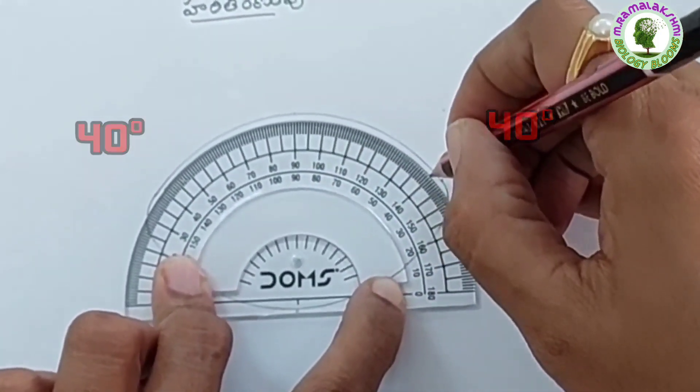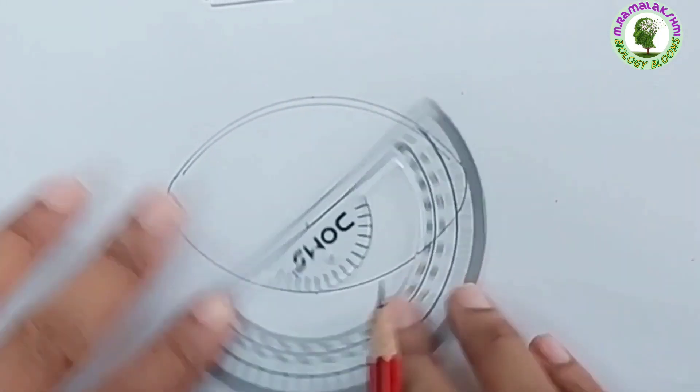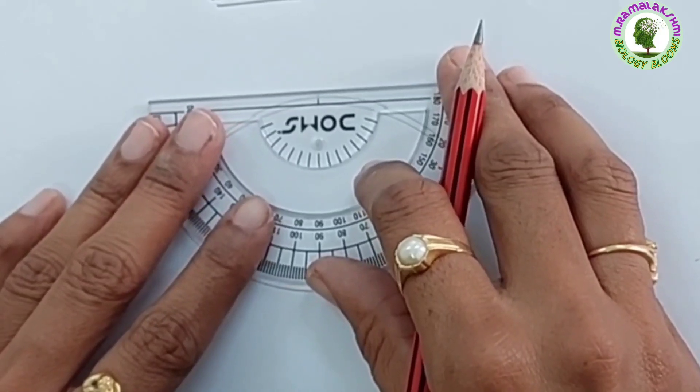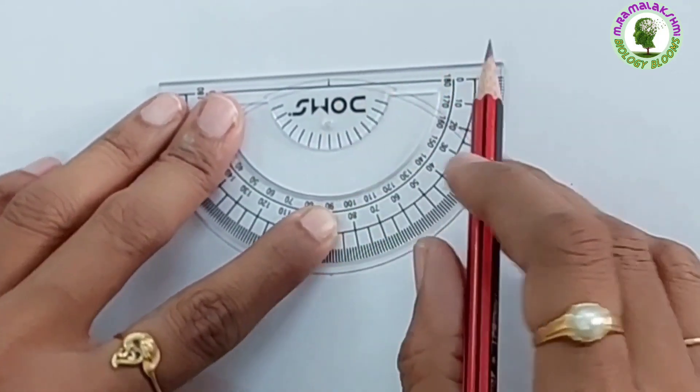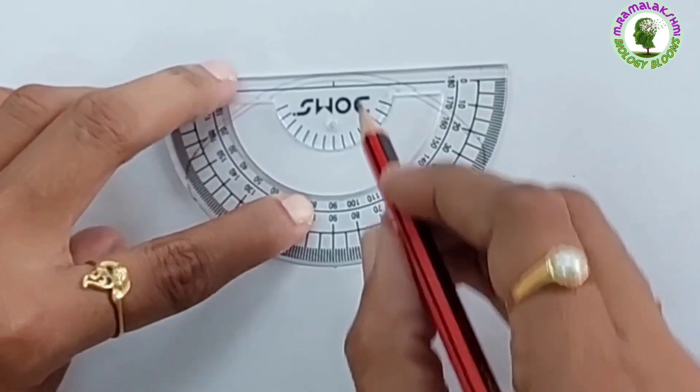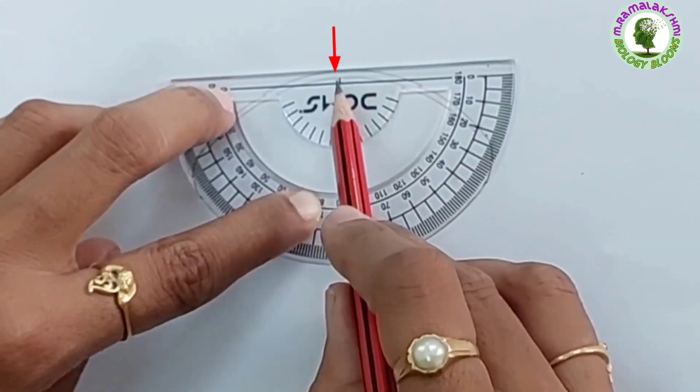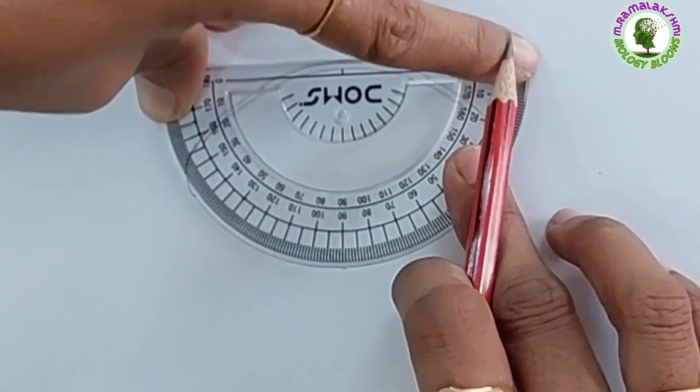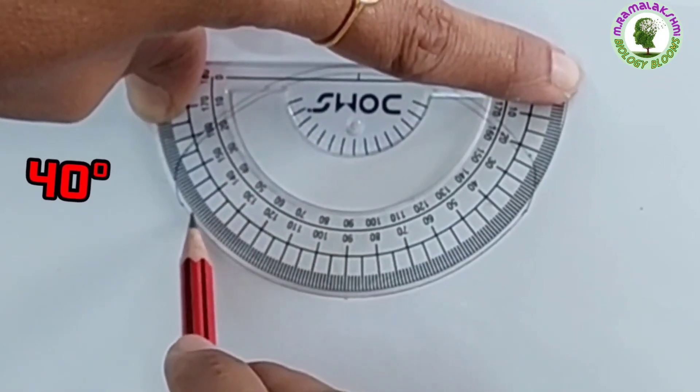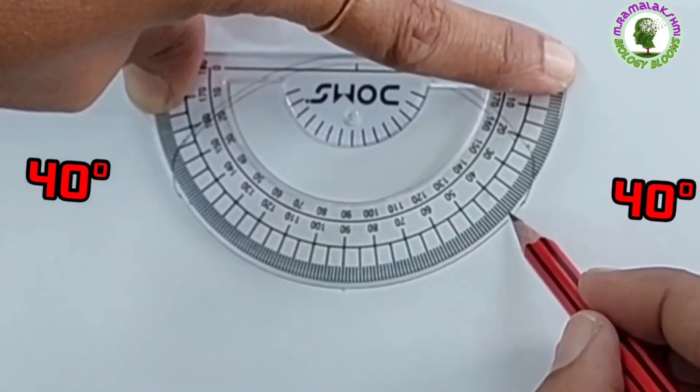Join the lines like this. Now, keep the protractor like this. Keep the black small vertical line at 90 degrees of the upper curve. Keep dots at 40 degrees from this side and 40 degrees from this side.